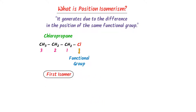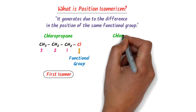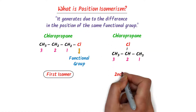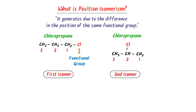Now, listen carefully. I am going to shift the position of this functional group of chlorine. I cut this chlorine functional group from the first carbon and attach it to the second carbon. Thus, I get another chloropropane.